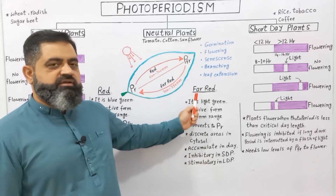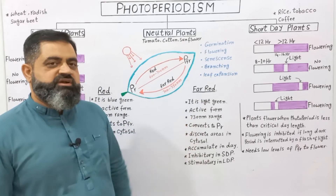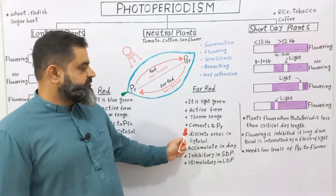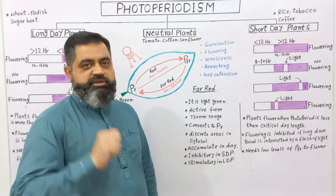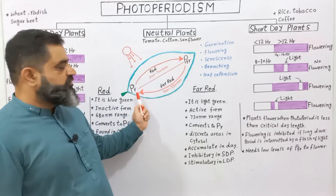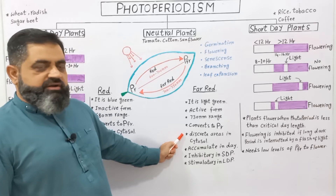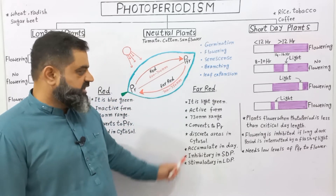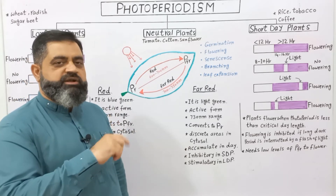The second type of phytochrome is known as phytochrome far red, represented as Pfr. Phytochrome far red is light green in color; it is the active form and it absorbs 730 nanometer wavelength of light — usually from 700 to 750 nanometers. It is converted into phytochrome red during the night or dark period. Phytochrome far red is present in discrete patches inside the cells along the plasma membrane, and it accumulates during the day, then is converted into phytochrome red during the nighttime.